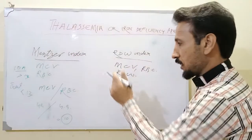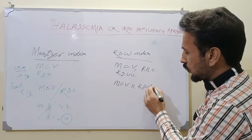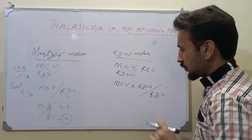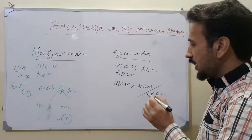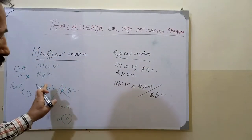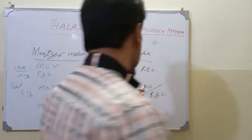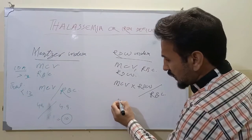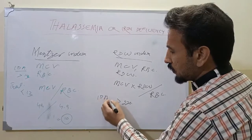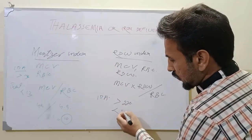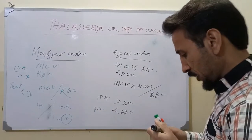The formula is: MCV multiplied by RDW, divided by the number of RBCs. This can be taken directly from the blood CP. It has been determined that a value of more than 220 is almost always indicative of iron deficiency anemia, while a value less than 220 is almost always seen in beta thalassemia trait.